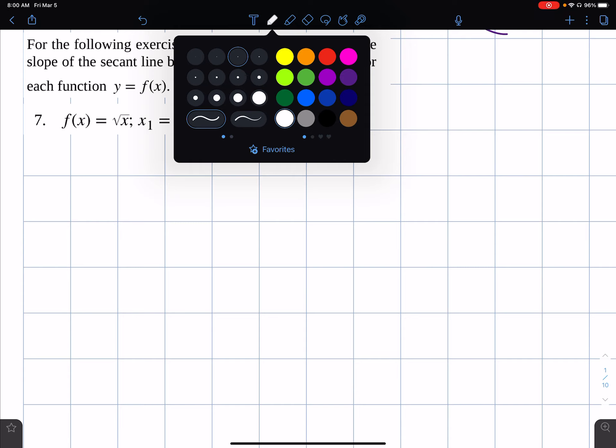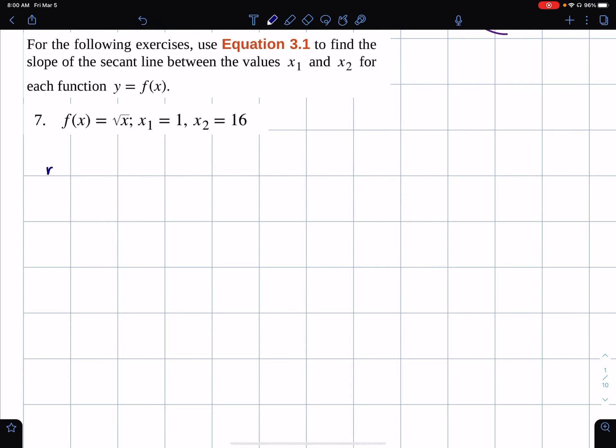So, what I'm going to write down is m secant equals f of x2 minus f of x1 divided by x2 minus x1. This is the slope of a line,